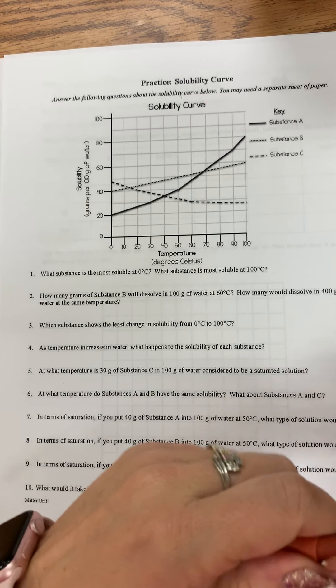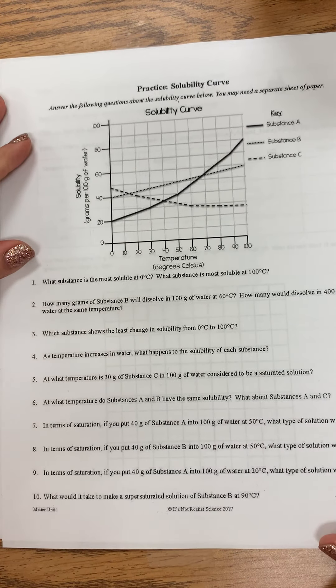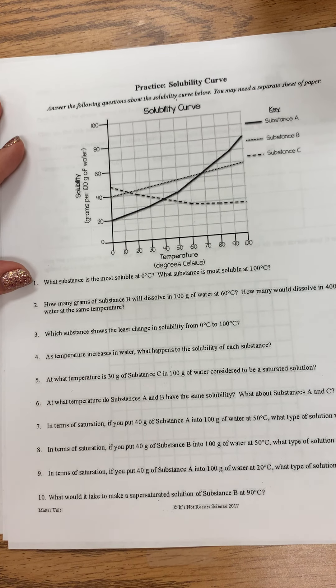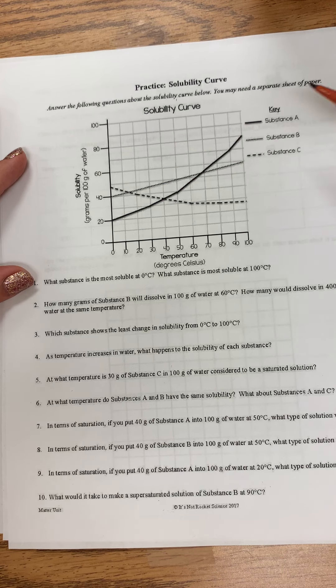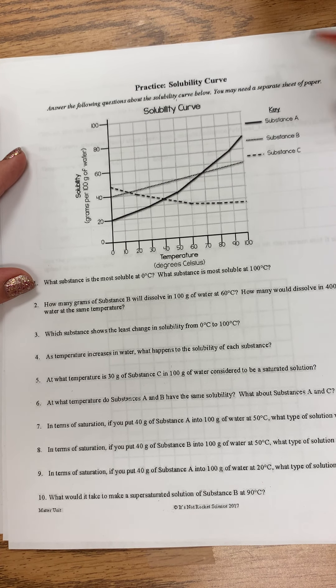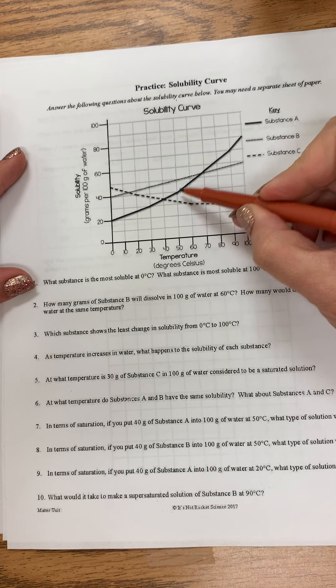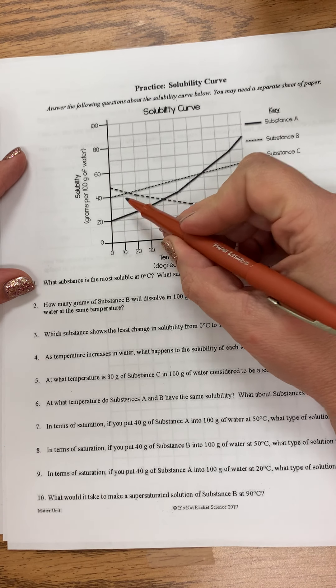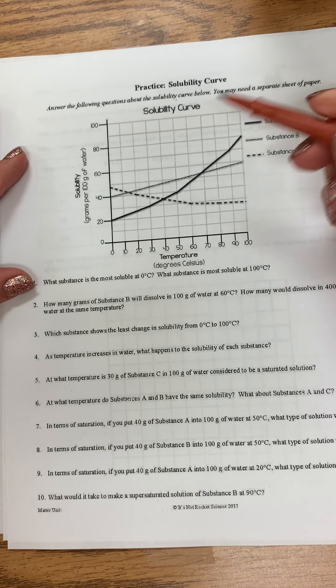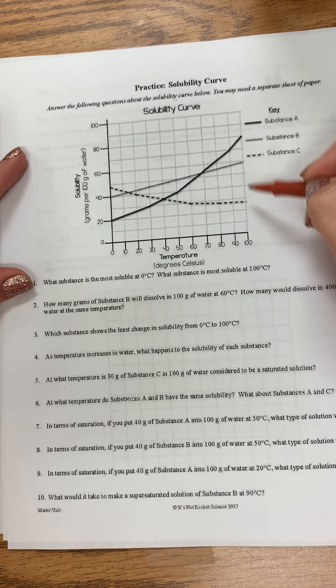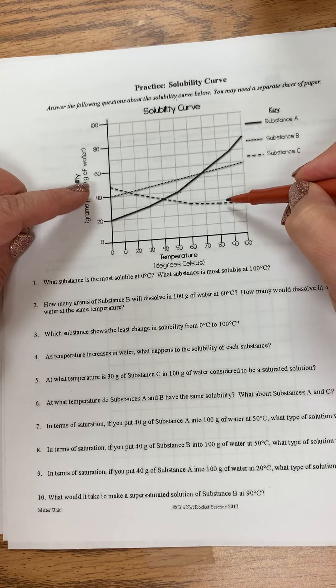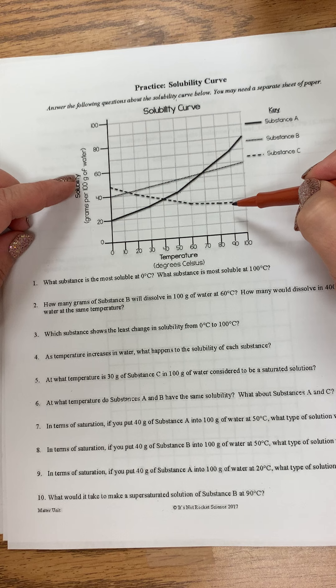All right, solubility curves. From the video you should know how to read them, but I was going to go over a couple examples here with your practice. Notice in the graph you have substance A, B, C. A is the solid line, B is the little dotted line, and C is the dashed line. Each of these is representing a different substance, and based on temperature, how much of that substance will be dissolved in water.